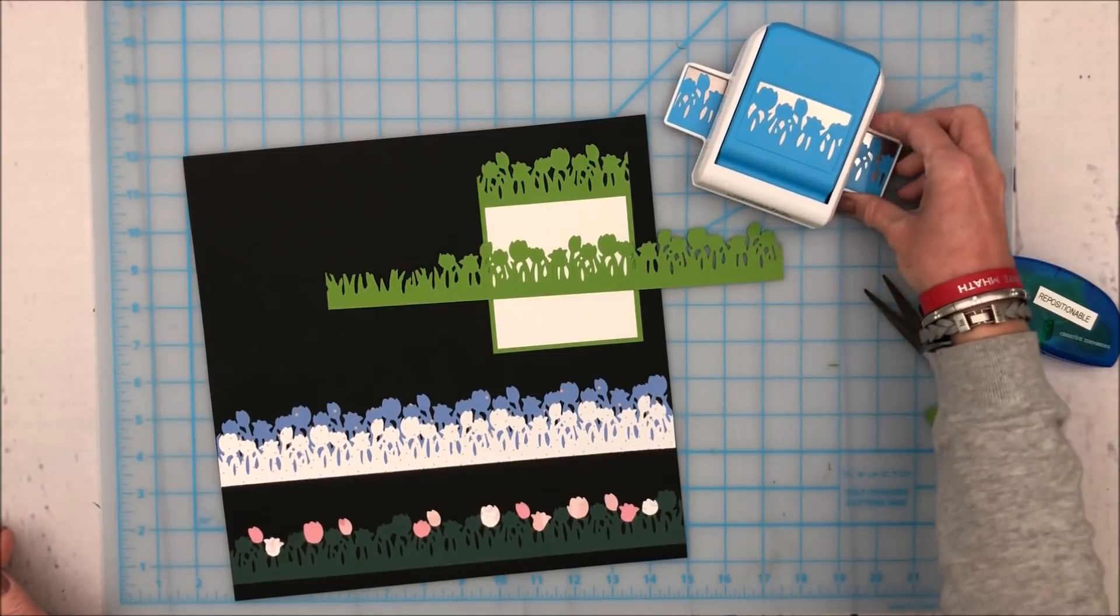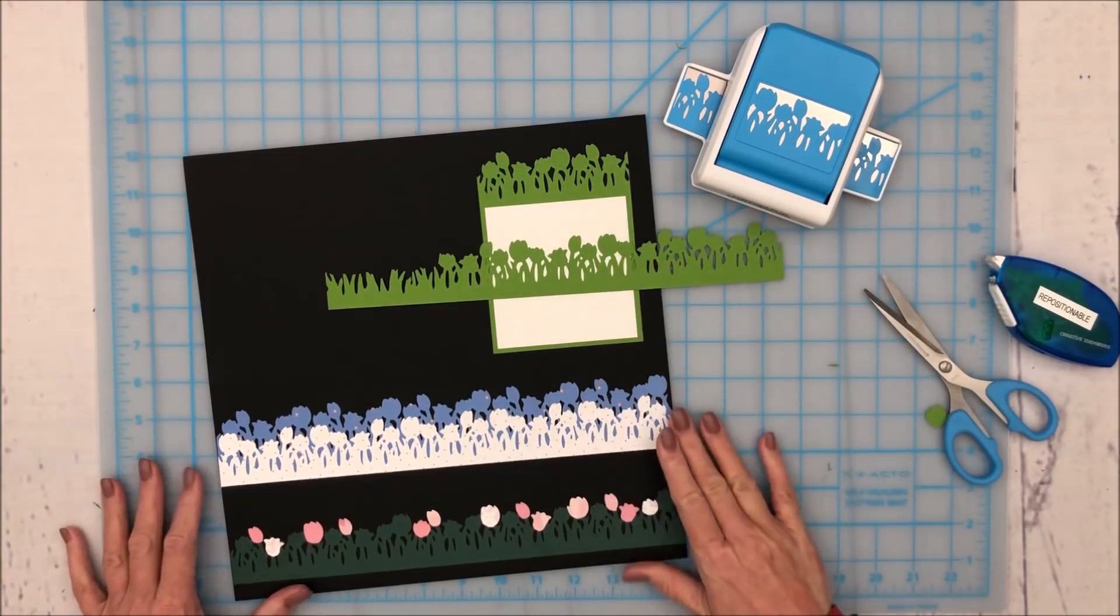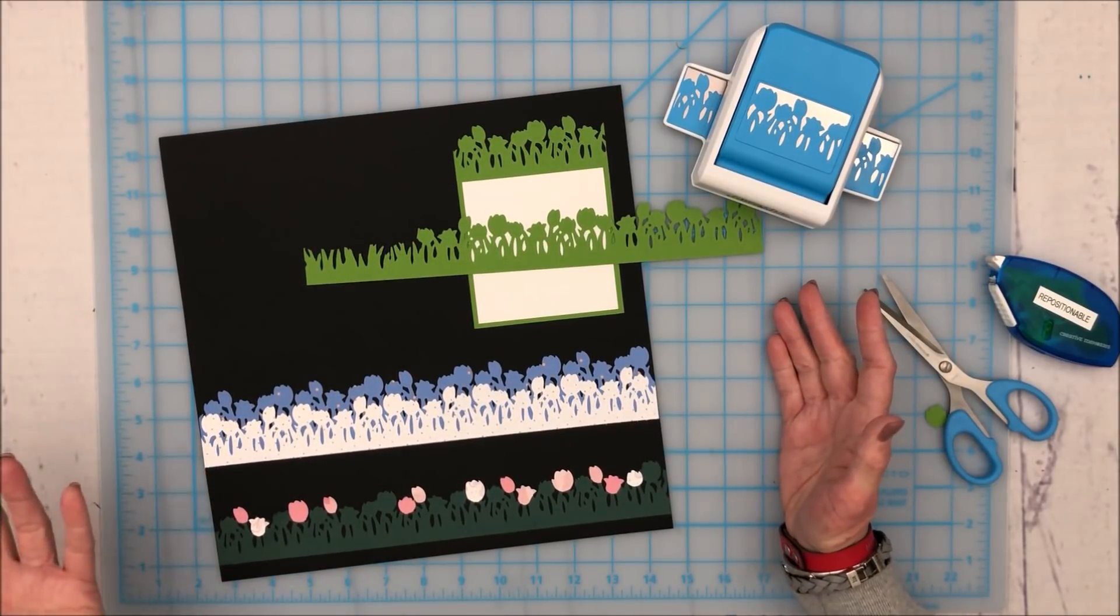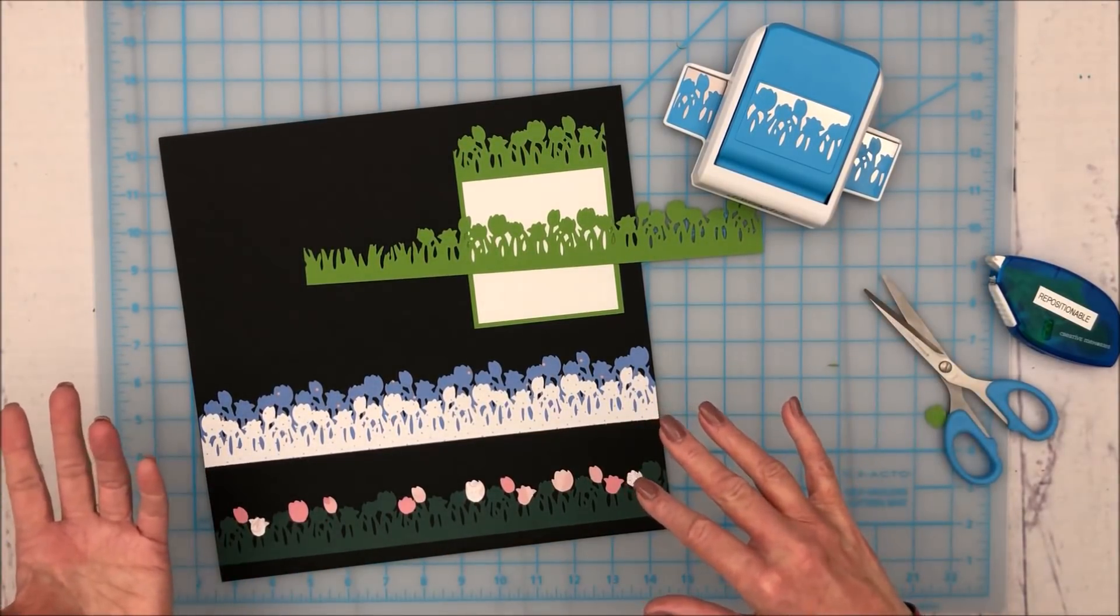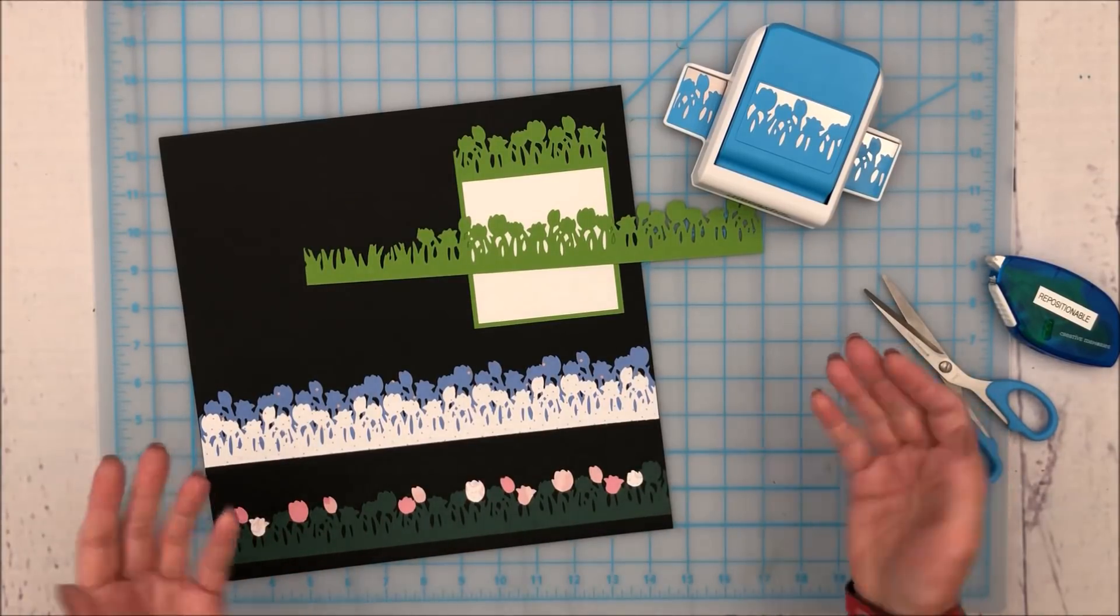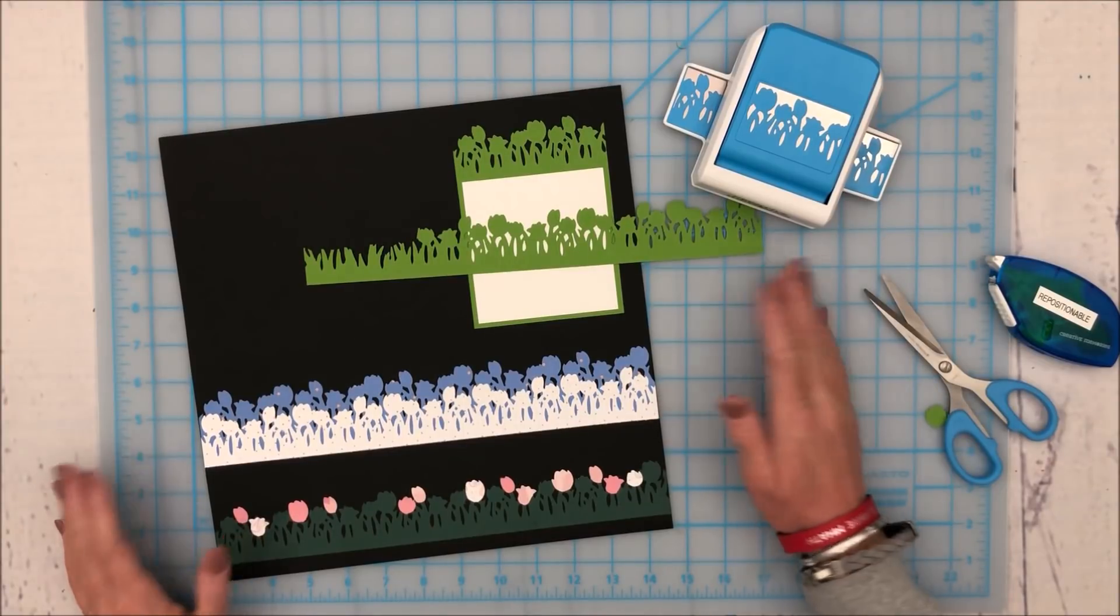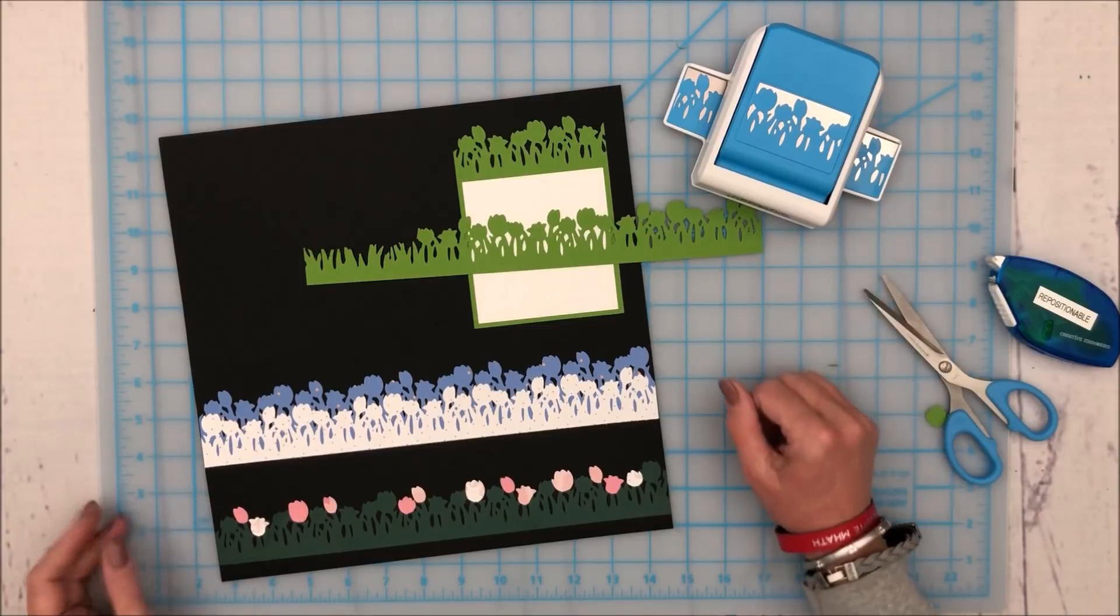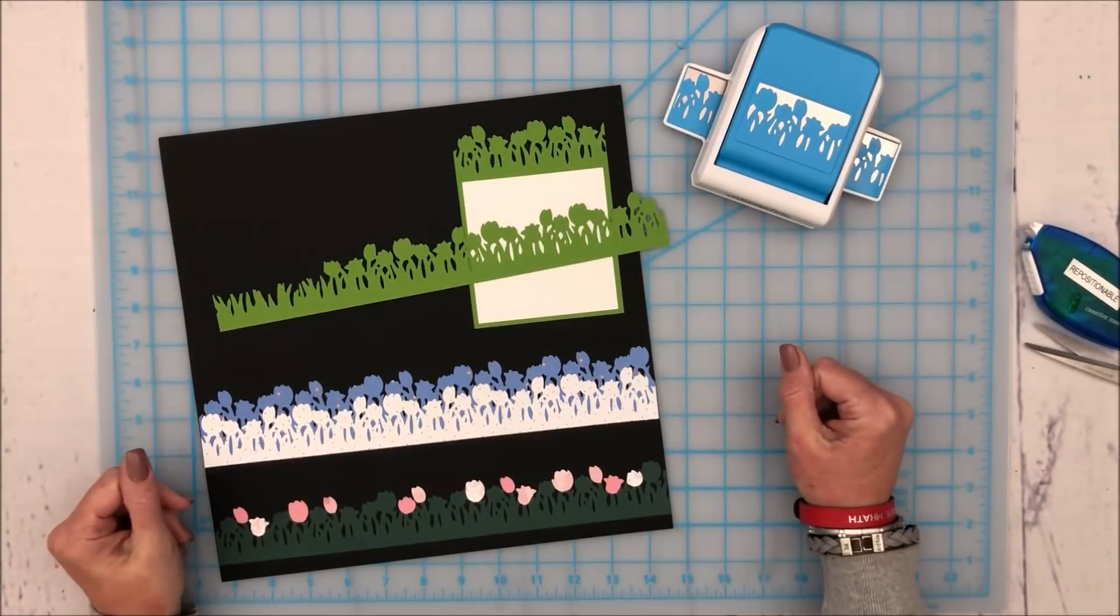So I hope that's given you a few different ideas. Again, take a look at your punches. Think about what if—what if I turned the paper, what if I punched upside down, what if I only used part of the punch? What can I do with these punches to make them more versatile and allow me to use them more often and not just collect dust in my drawers? Thanks very much for joining me. Take care, bye bye for now.